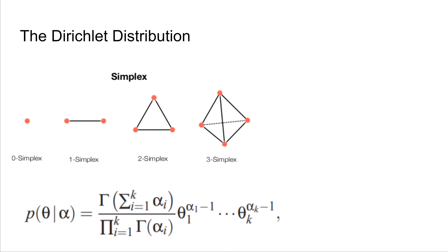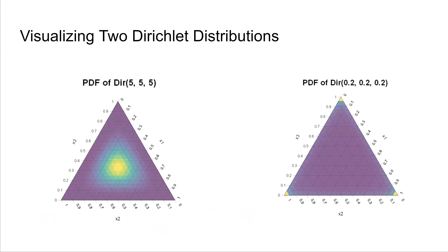The PDF of the Dirichlet distribution with parameter alpha is shown at the bottom of this slide. In the PDF, we see the uppercase Greek letter gamma, which denotes the gamma function. To give some intuition on the Dirichlet distribution, we now visualize it. We plot three-dimensional Dirichlet random variables, since we can visualize them in two dimensions.